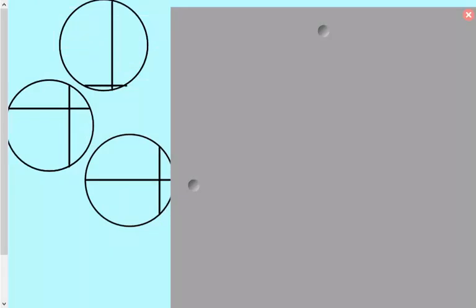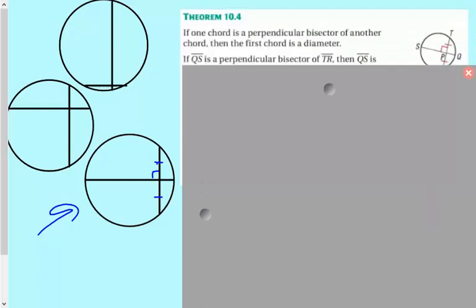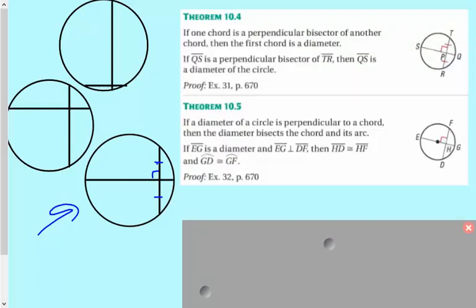This is a little more complicated than the other one. I have some chords here and I've drawn three different scenarios. One of them, this third one here is specific. What I did here is I drew it so that it is perpendicular. The two chords are perpendicular and the first chord bisects the other chord. If that happens, that chord is going to be the diameter.